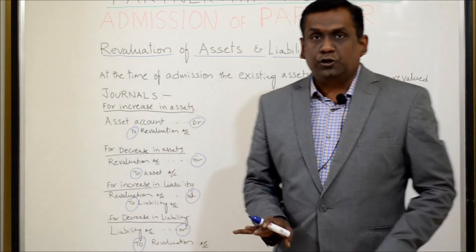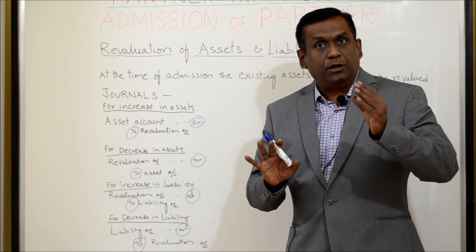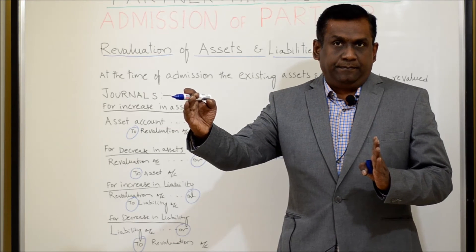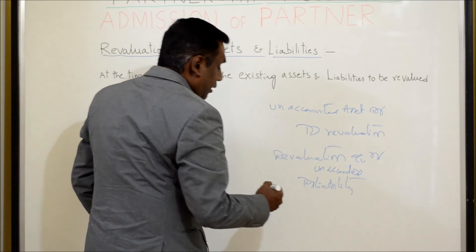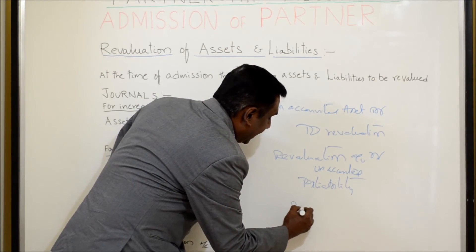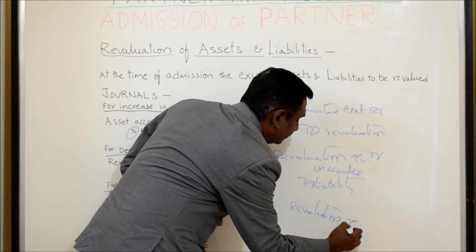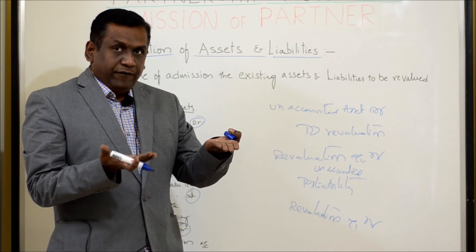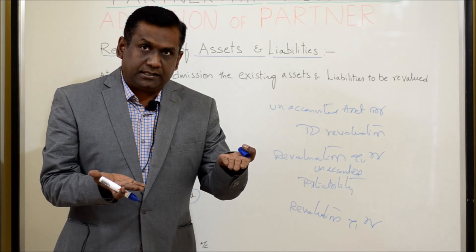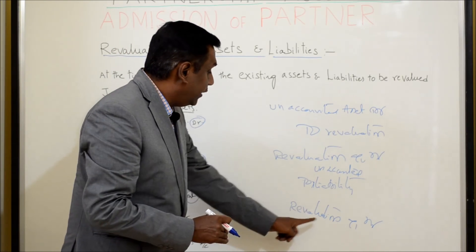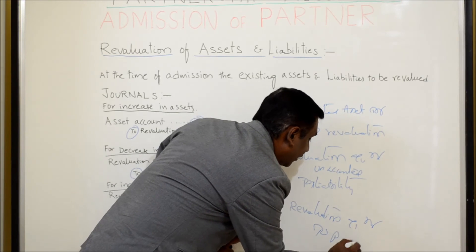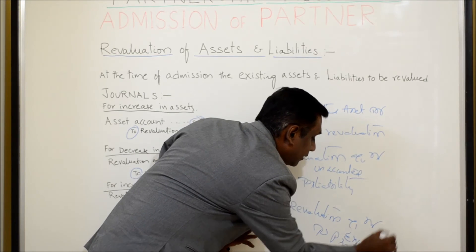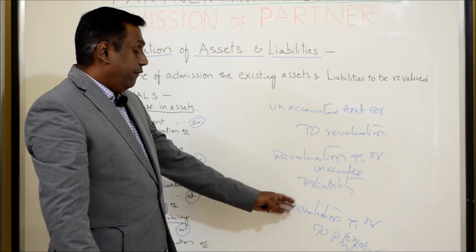After doing this, we have to prepare the revaluation account and see whether we got a profit or loss. If there is a profit, that profit has to be distributed to the old partners. When there is a profit, the revaluation account will show a credit balance — to distribute that, you debit it. So revaluation account is debited and the existing partners' capital account is credited.